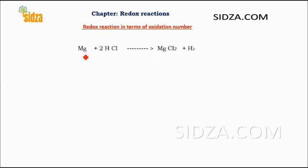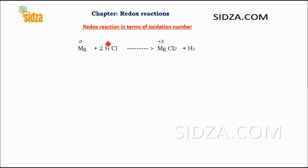In this reaction, magnesium reacts with HCl and forms magnesium chloride and hydrogen gas. Magnesium in the elemental state has an oxidation number of zero, but here in this compound magnesium has an oxidation number of plus two. Hydrogen is plus one in HCl, and zero in H2. Chlorine is minus one on both sides.